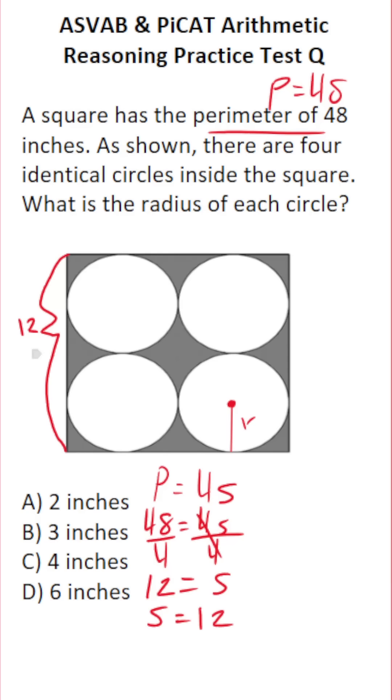This would be a radius. Well, we know that the side length of this square is 12. So from here all the way to here is 12. And what do we have here? We have a center point here and a center point here. This is a radius, this is a radius, this is a radius, and this is a radius.